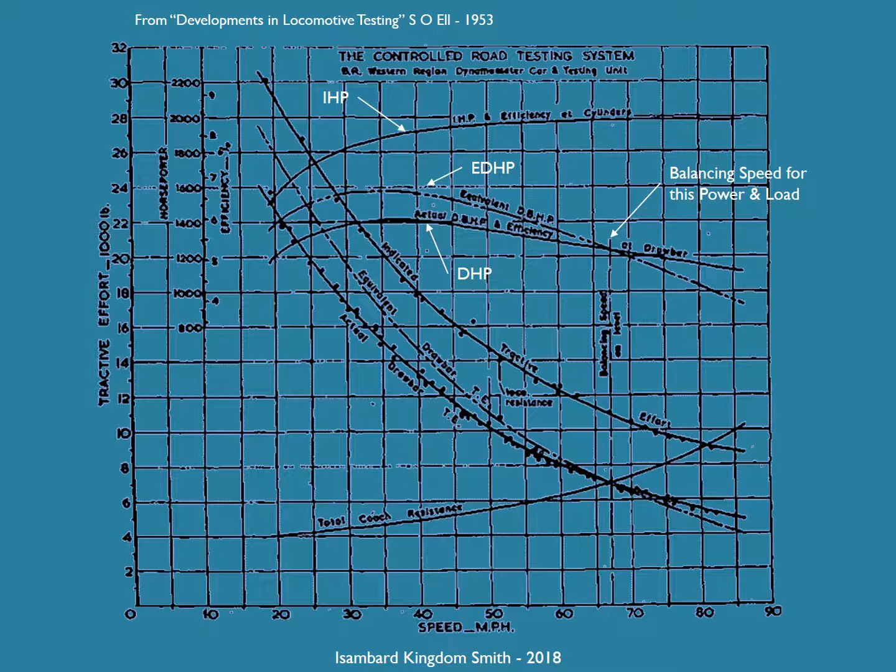Coach resistance gets higher with speed because friction and especially air resistance increases with speed. The speed at which the curve for the trailing load resistance intersects the drawbar tractive effort is the balancing speed for level track. Below that speed, equivalent drawbar horsepower is more than drawbar horsepower. Above that speed, equivalent drawbar horsepower is less than drawbar horsepower.